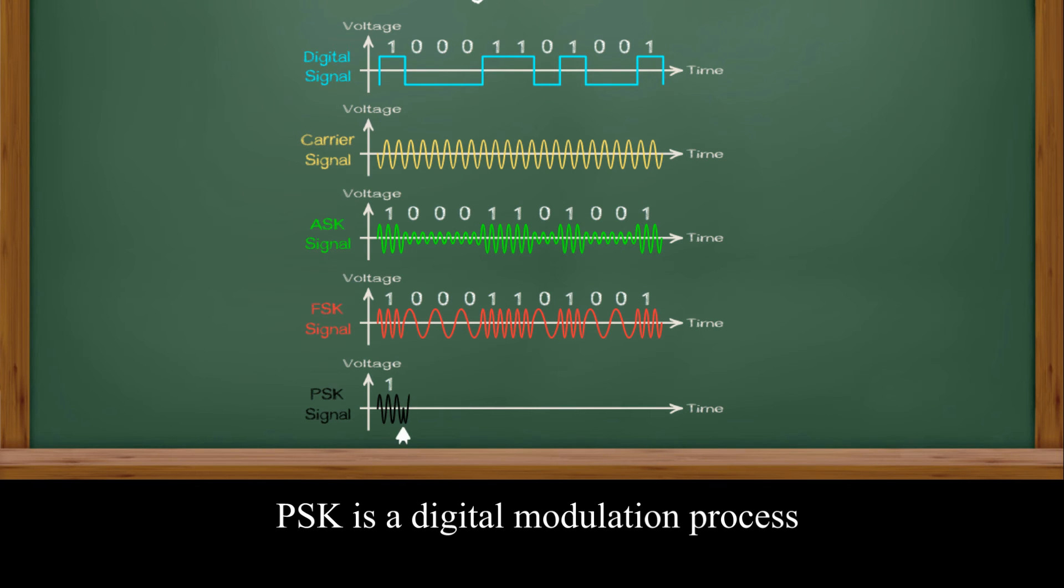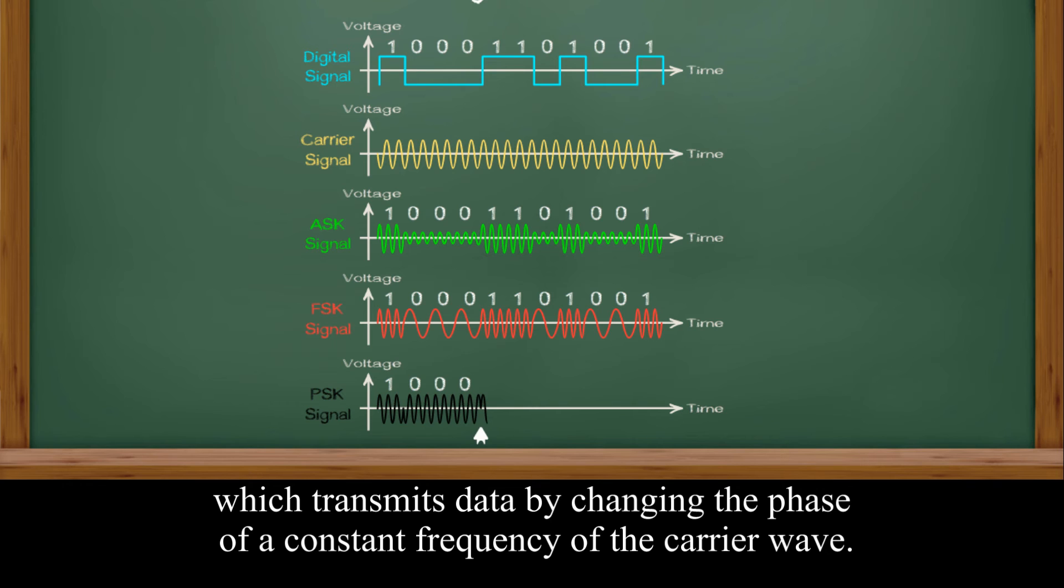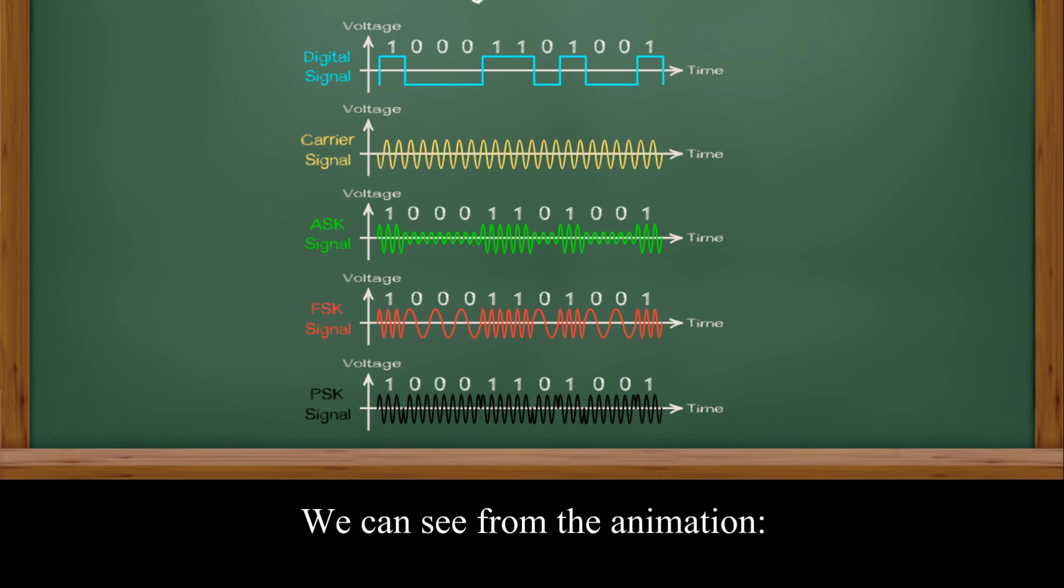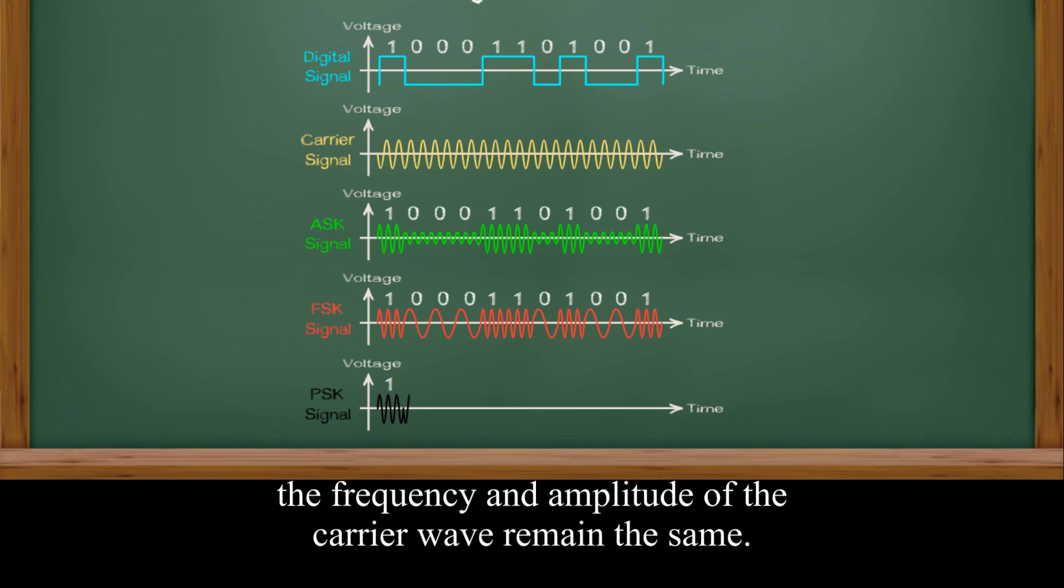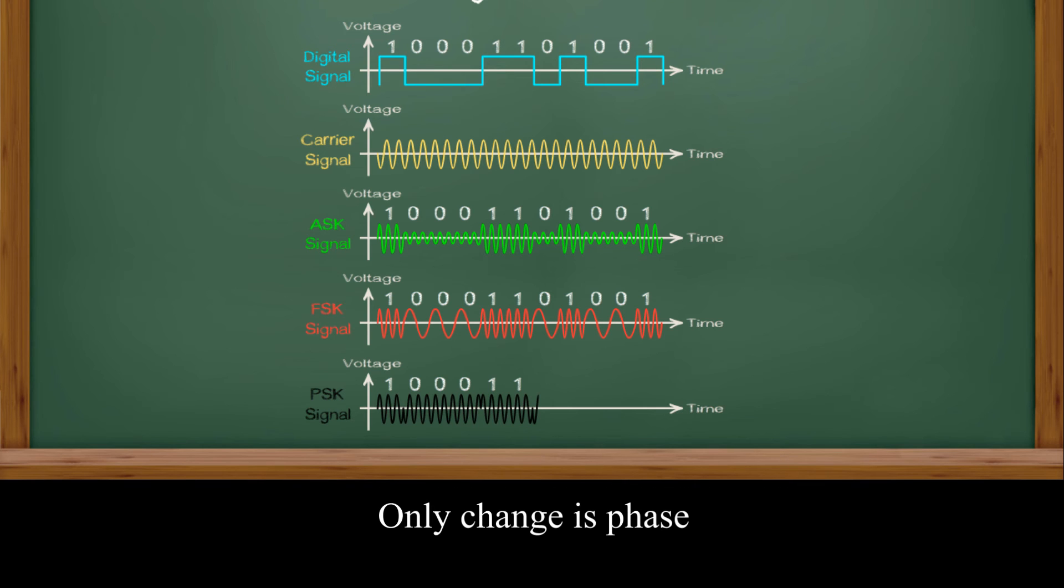PSK is a digital modulation process which transmits data by changing the phase of constant frequency of the carrier wave. We can see from the animation the frequency and amplitude of the carrier wave remain the same. Only change is phase.